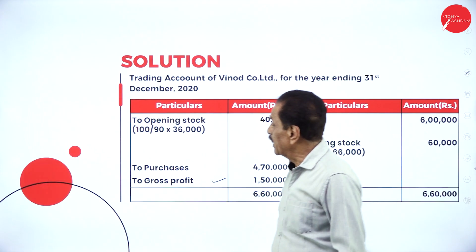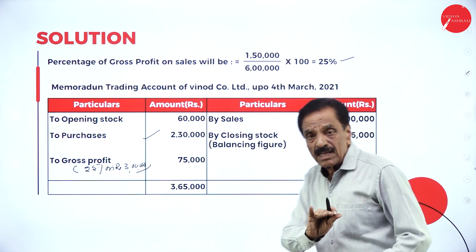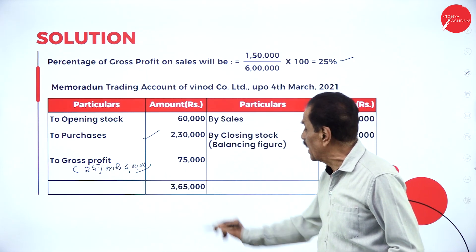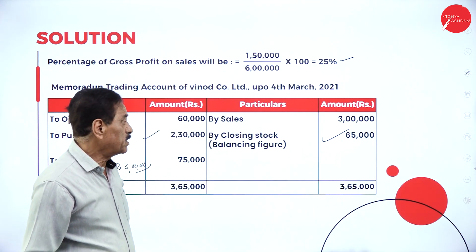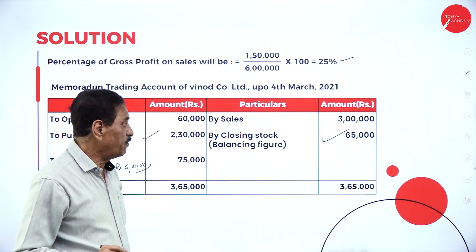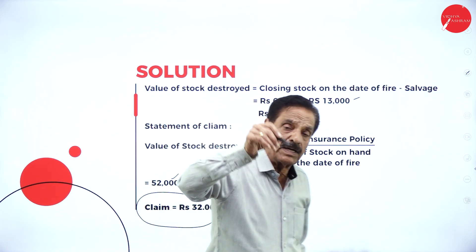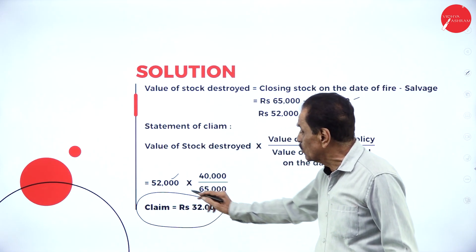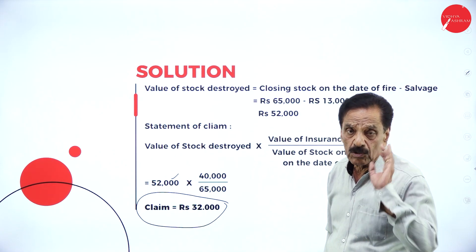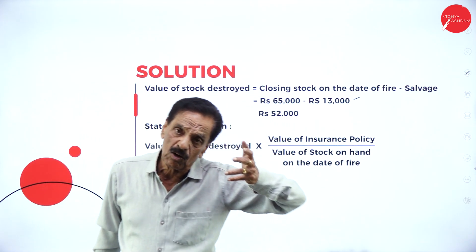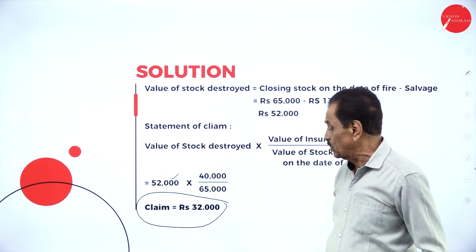The closing stock becomes the opening stock for the next period. Purchases and sales are given; there is no closing stock. Gross profit is 25% on Rs. 3,00,000 = Rs. 75,000. Adding the debit side gives Rs. 3,65,000; the balancing figure — stock on the date of fire — is Rs. 65,000. Out of Rs. 65,000, Rs. 13,000 was saved, so the claim made is Rs. 52,000. But as per the average clause, since the policy is Rs. 40,000 and stock on date of fire is Rs. 65,000, the insurance company pays only Rs. 32,000 proportionately.